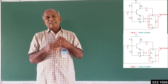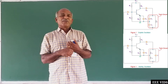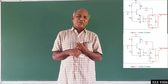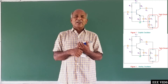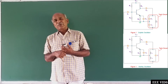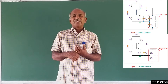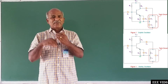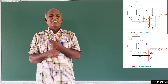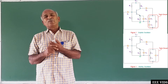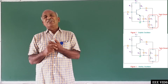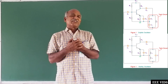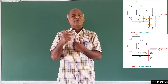In the case of the Colpitts oscillator, the output frequency formula is: F equals 1 by 2 pi root of (C1 times C2) divided by (C1 plus C2) into L. So for total capacitance in Colpitts, C1 and C2 are in series, giving C1·C2 divided by (C1 plus C2), and this formula is used.